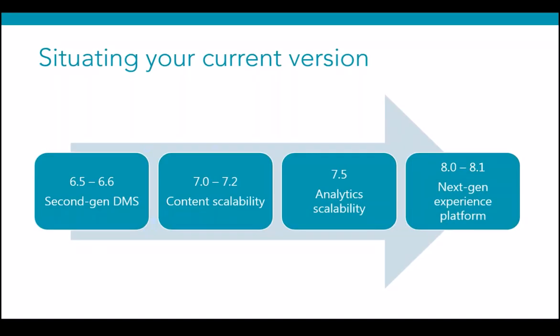Version 6 saw the second-generation DMS coming in. Version 7 was all about content scalability — the buckets feature — and also had nice publishing improvements like publish-related items. Version 7.5 was really about analytic scalability. And then version 8, of course, is the next-generation experience platform, which everyone's very excited about.